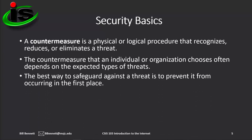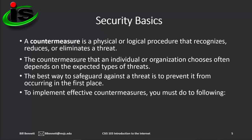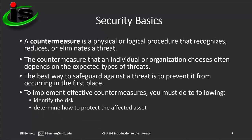The countermeasures that individuals and organizations use to protect against threats varies. The best way to safeguard against a threat is to prevent it from occurring in the first place, but that's not always possible. In some cases, individuals and organizations must implement different countermeasures to identify, contain, and control threats or to plan for losses in service or theft by purchasing insurance or installing backup systems. To implement effective countermeasures, you must identify the risk, determine how to protect the affected asset, and calculate the cost of the resources needed to protect it. This process of risk management focuses on identifying threats and determining available and affordable countermeasures to protect assets from them.